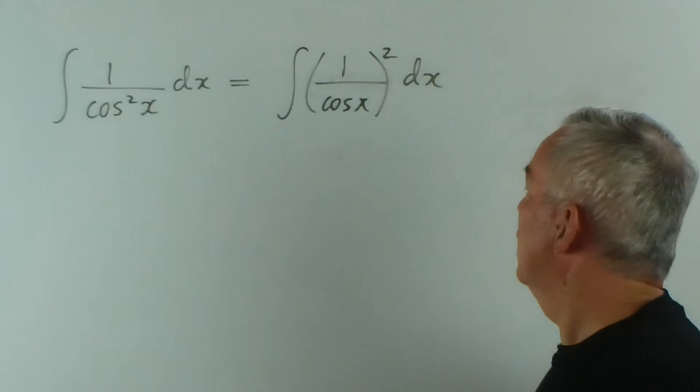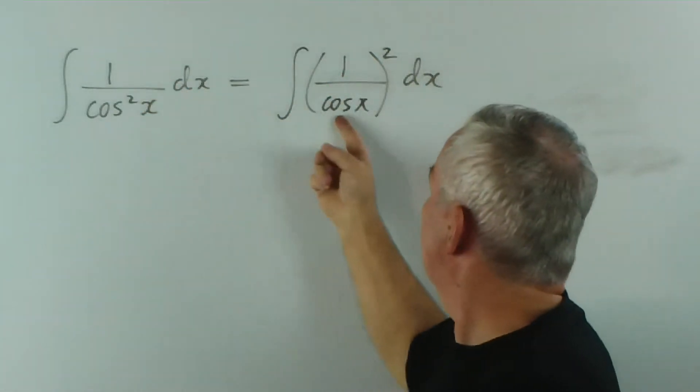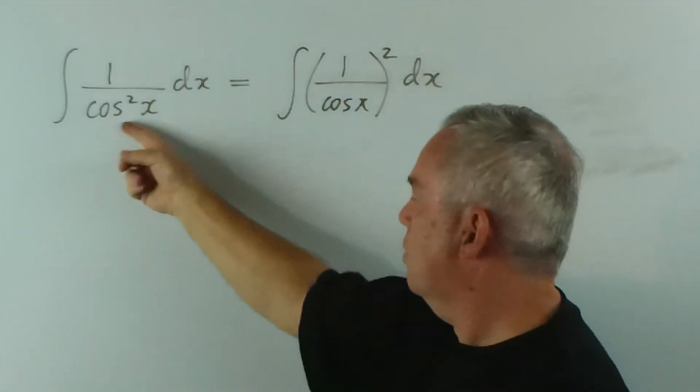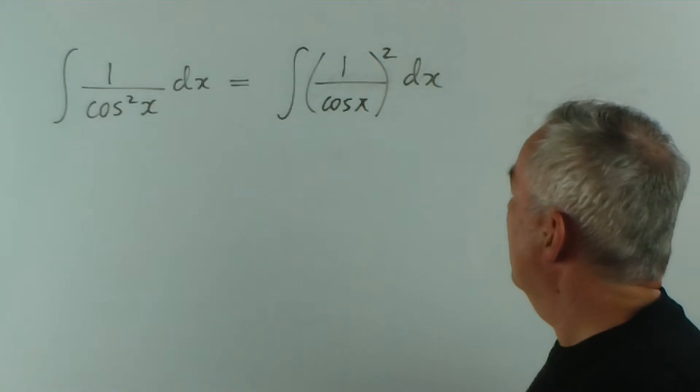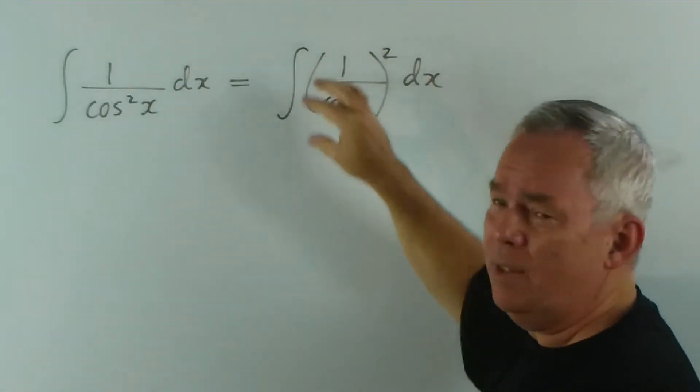Aha, you might be thinking. Yes, 1 squared is 1 and cos x squared is cos squared x. Why did I do this?